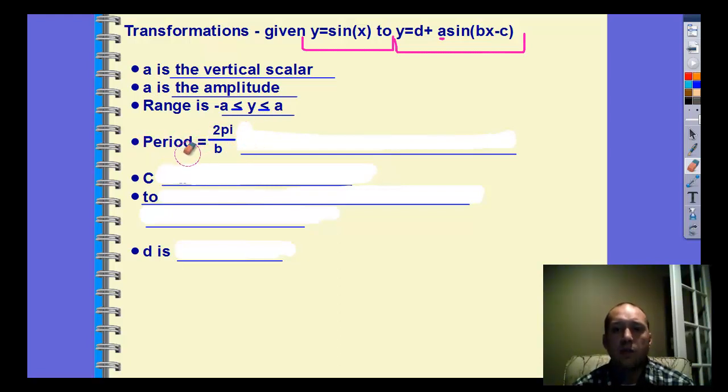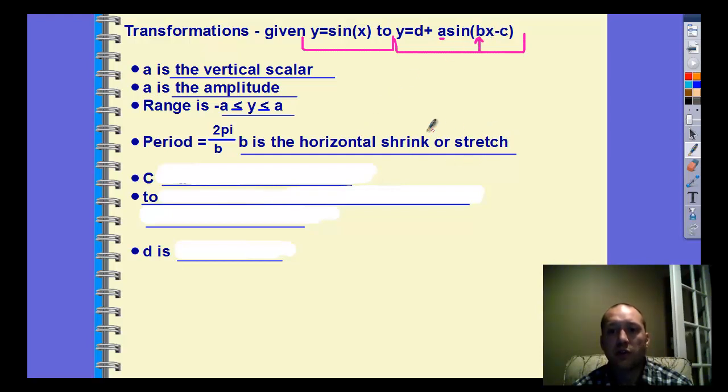The period, how big the period is, is always 2π over b. b is the horizontal shrink or stretch. Now, b in this one, notice how b is being multiplied to x, so it's the horizontal shrink or stretch. Now, that affects everything in this parenthesis. So we're going to talk more about that in the future. But we do 2π over b to figure out how long the period would be.